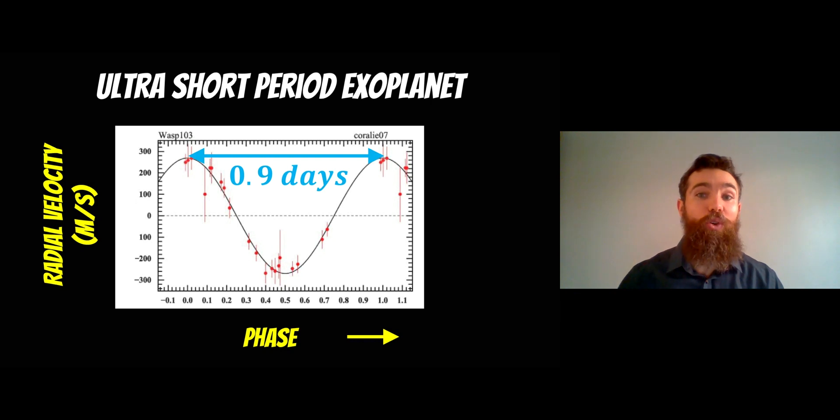It's an ultra short period exoplanet, which means that it has an orbital period less than one day. Its orbital period is about 0.9 days, and this was found by looking at the radial velocity method as well as the time between the transits.